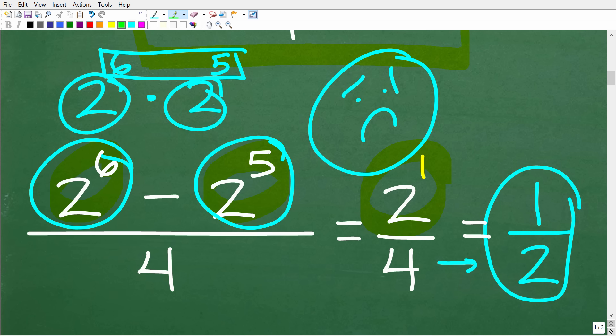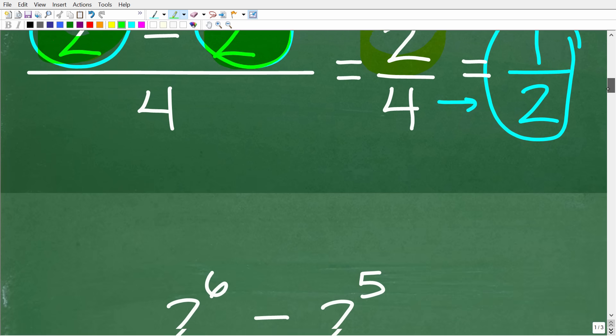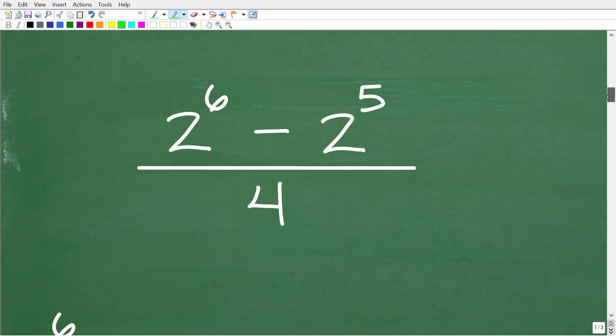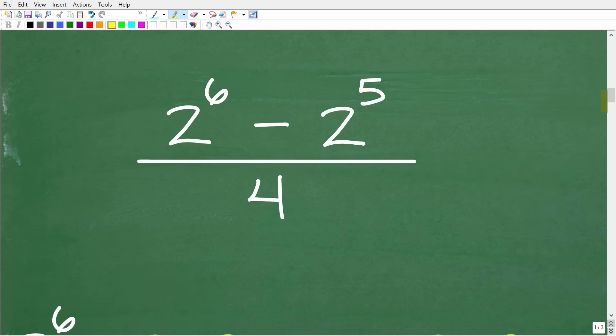All right, so what do we need to do here? Well, what we need to do is figure out what these values actually are. So we have 2 to the 6th and 2 to the 5th. So these are actual numeric values. So what are they? Well, let's go ahead and take a look at how to figure out what 2 to the 6th and 2 to the 5th are.